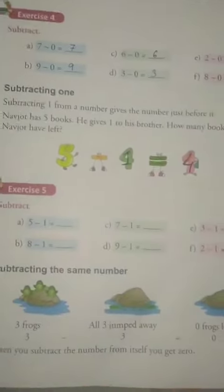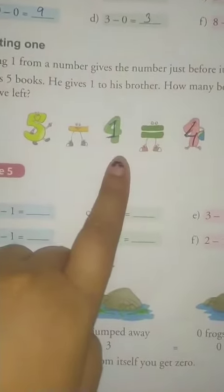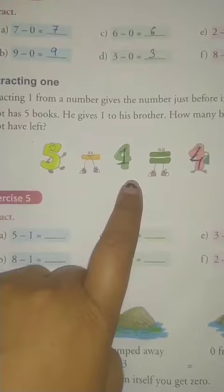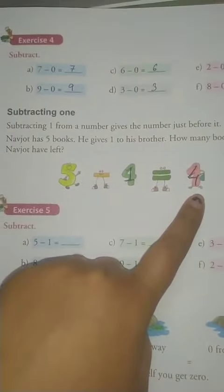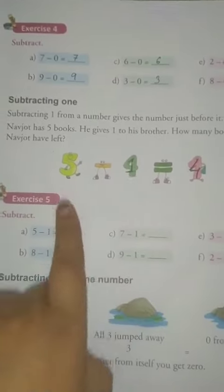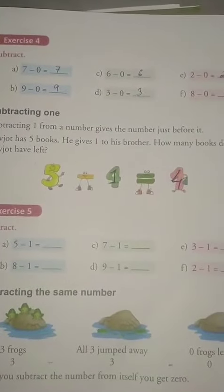Now, Navjot has 5 books. He gives 1 to his brother. So how many books does Navjot have left? What comes before 5? 4. Right?